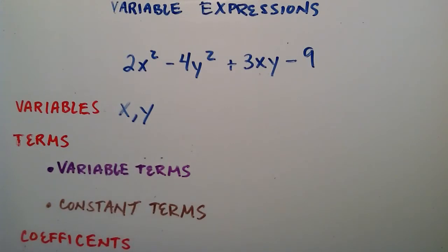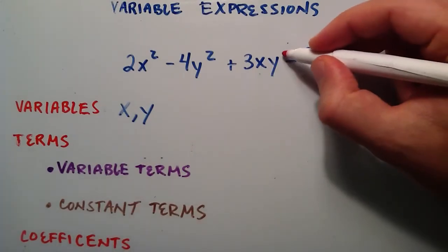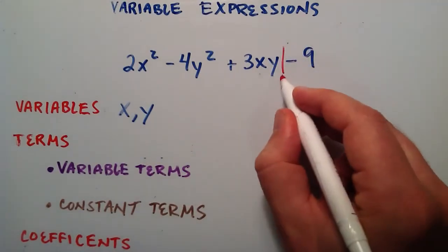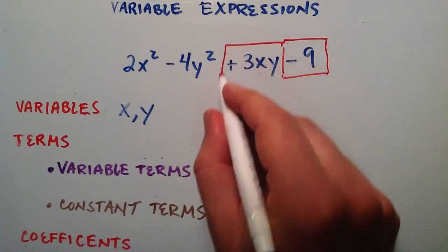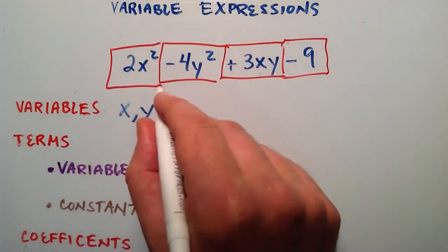So what is a term? A term is basically everything in our variable expression that is separated by the minus or plus sign. I'll just go ahead and put some boxes around our terms here so that you can see that more clearly. In this case we have four different terms.